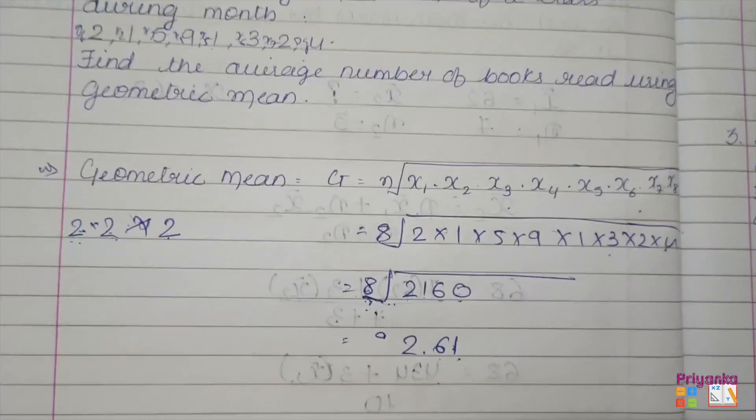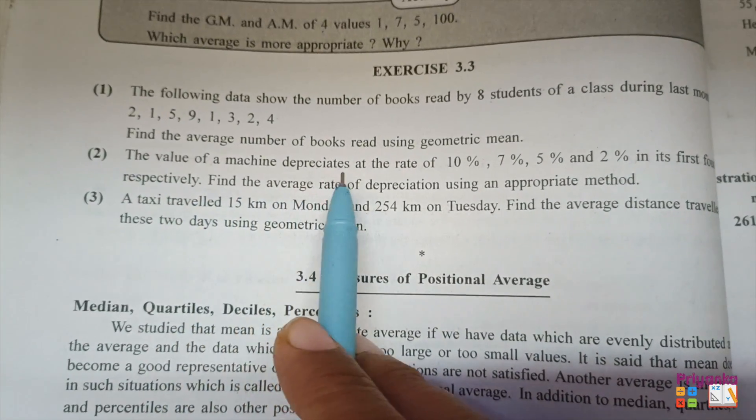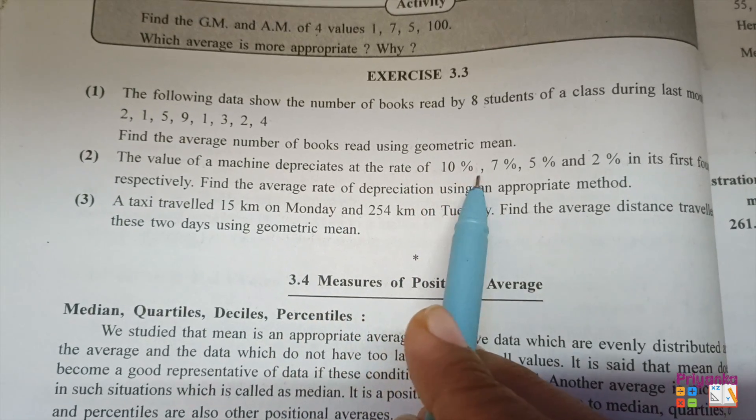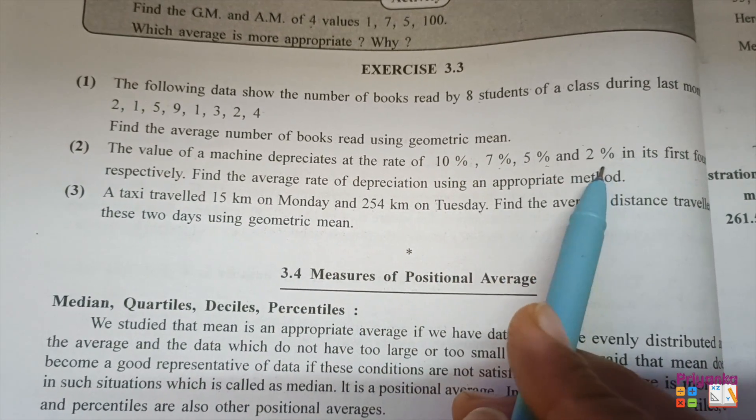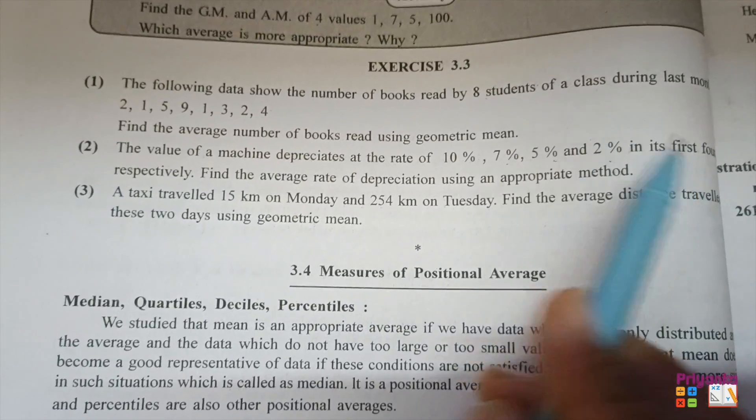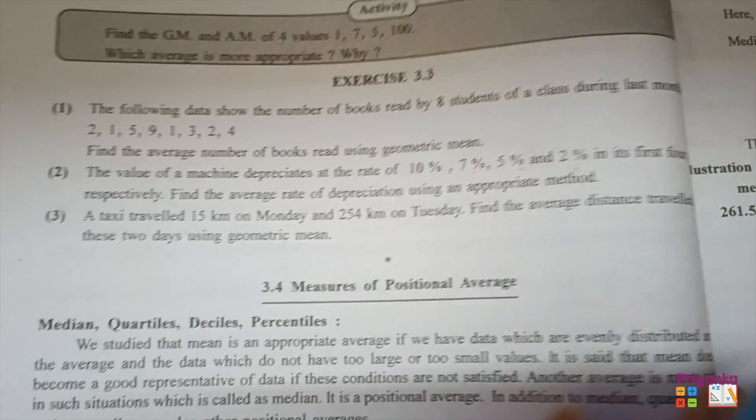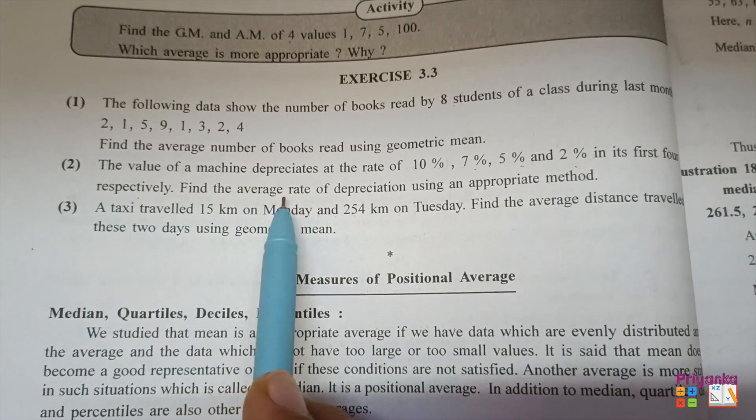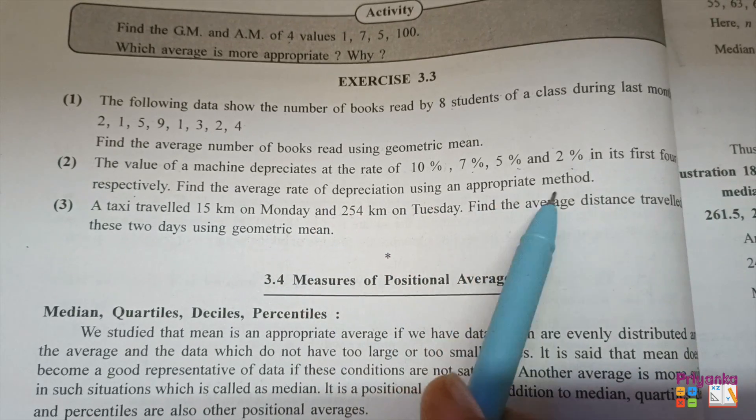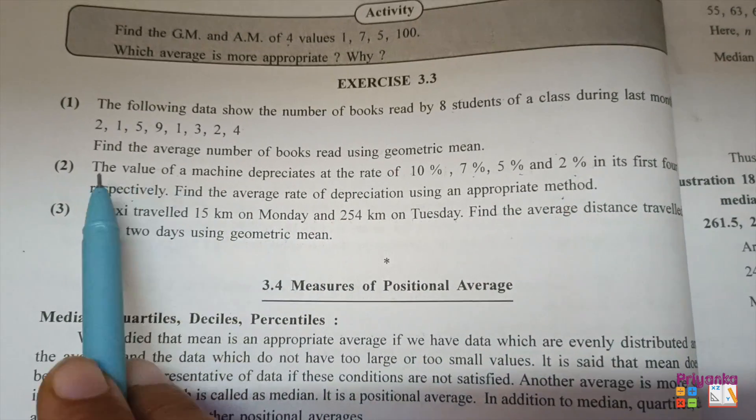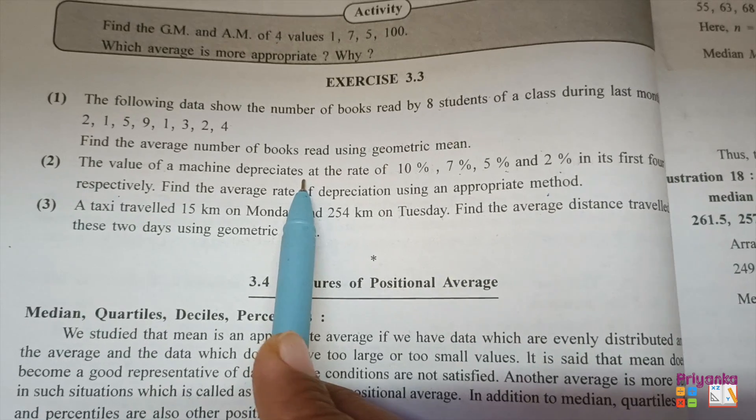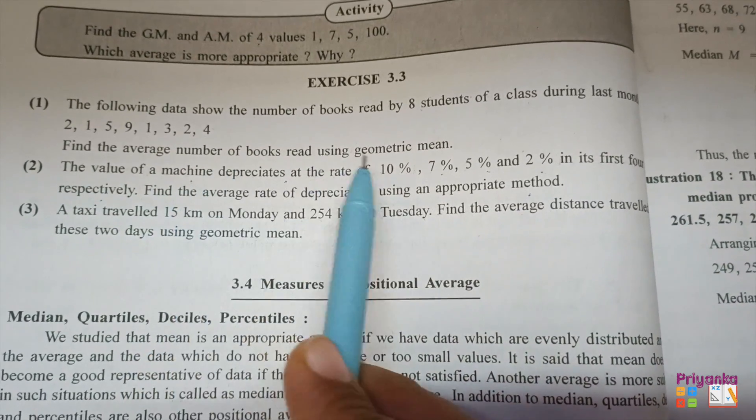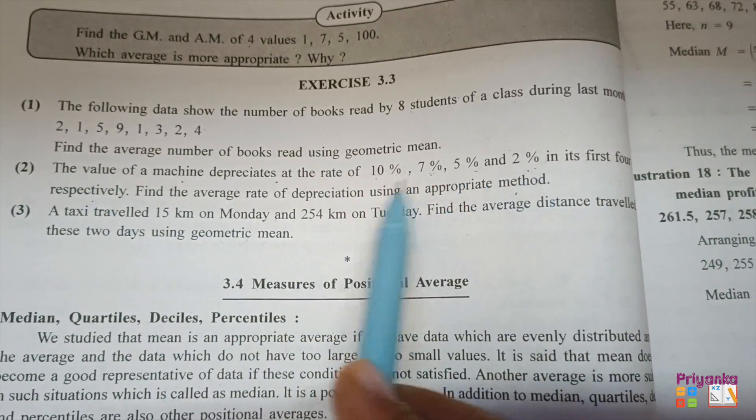Moving to the next question. The value of a machine depreciates at the rate of 10%, 7%, 5%, 2% in the first 4 years, respectively. Find the average rate of depreciation by using appropriate method. Now the value of the machine depreciates - machine value is less than 4 years.